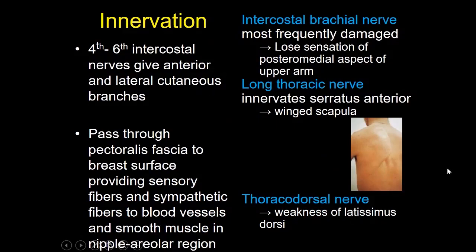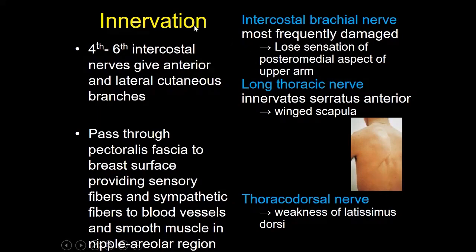Innervation is important to know about, but it's most important for our surgical colleagues because when they're doing surgery, if they damage some of the nerves, patients can have persistent symptoms. For example, cutting across the intercostal brachial nerve leads to loss of sensation to the posterior medial aspect of the upper arm; the long thoracic nerve innervates the serratus anterior, and damage leads to a winged scapula; and the thoracodorsal nerve leads to weakness of the latissimus dorsi muscle. Most importantly, the fourth to sixth intercostal nerves provide anterior and lateral cutaneous branches that pass through the pectoralis fascia and go to the breast surface, providing sensory fibers and sympathetic fibers to the blood vessels and smooth muscles in the nipple-areola region, which is important during lactation.